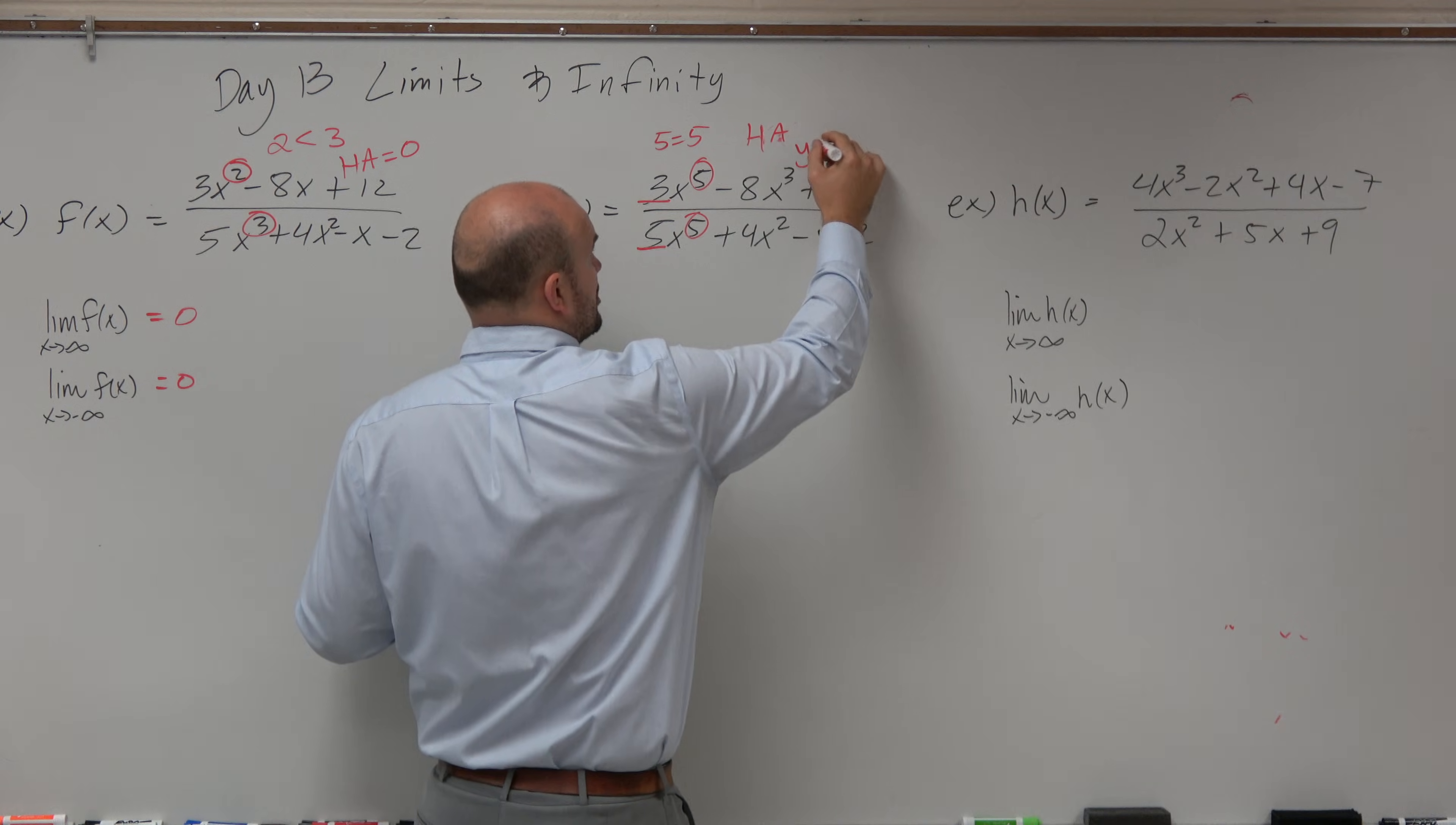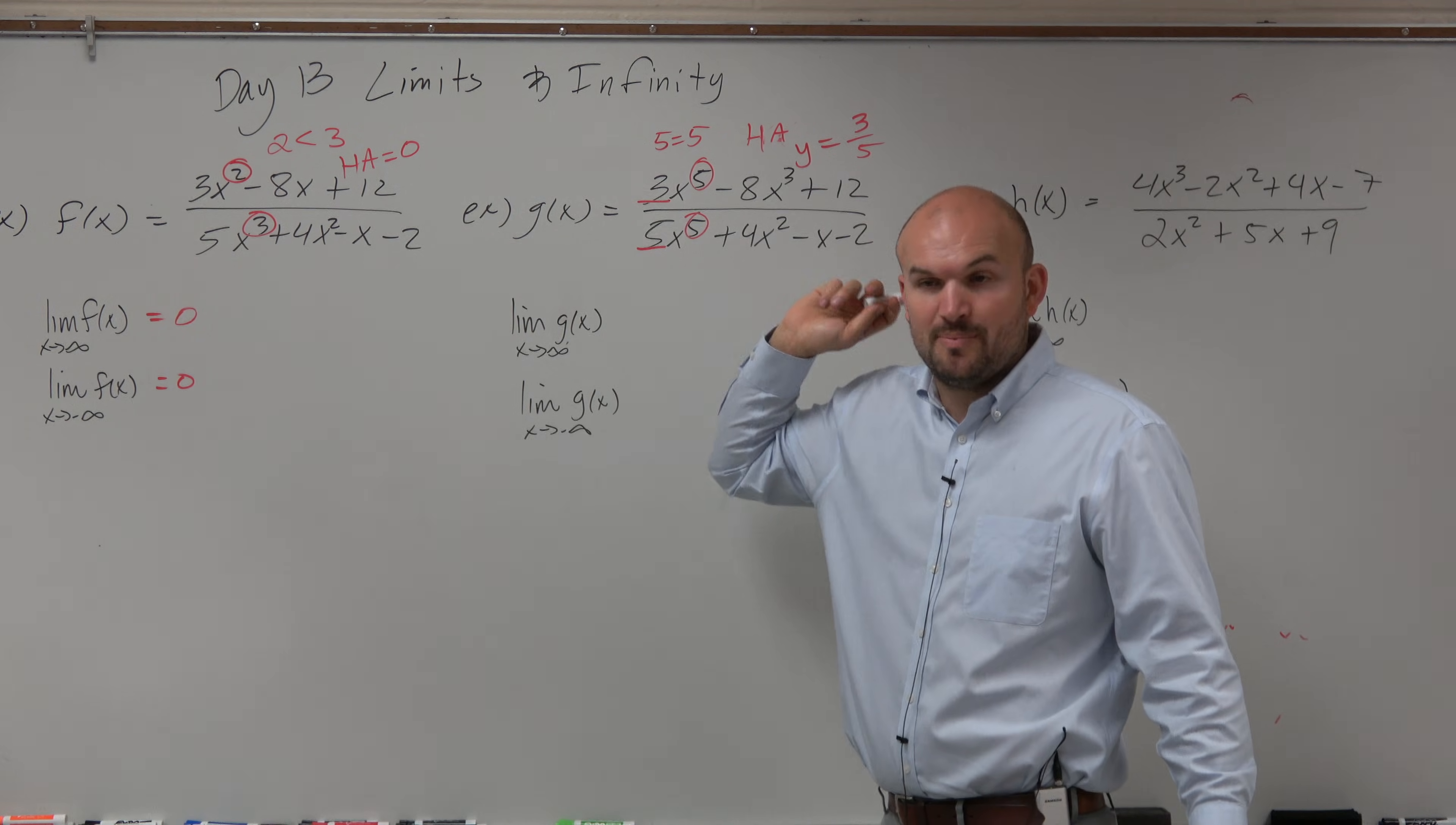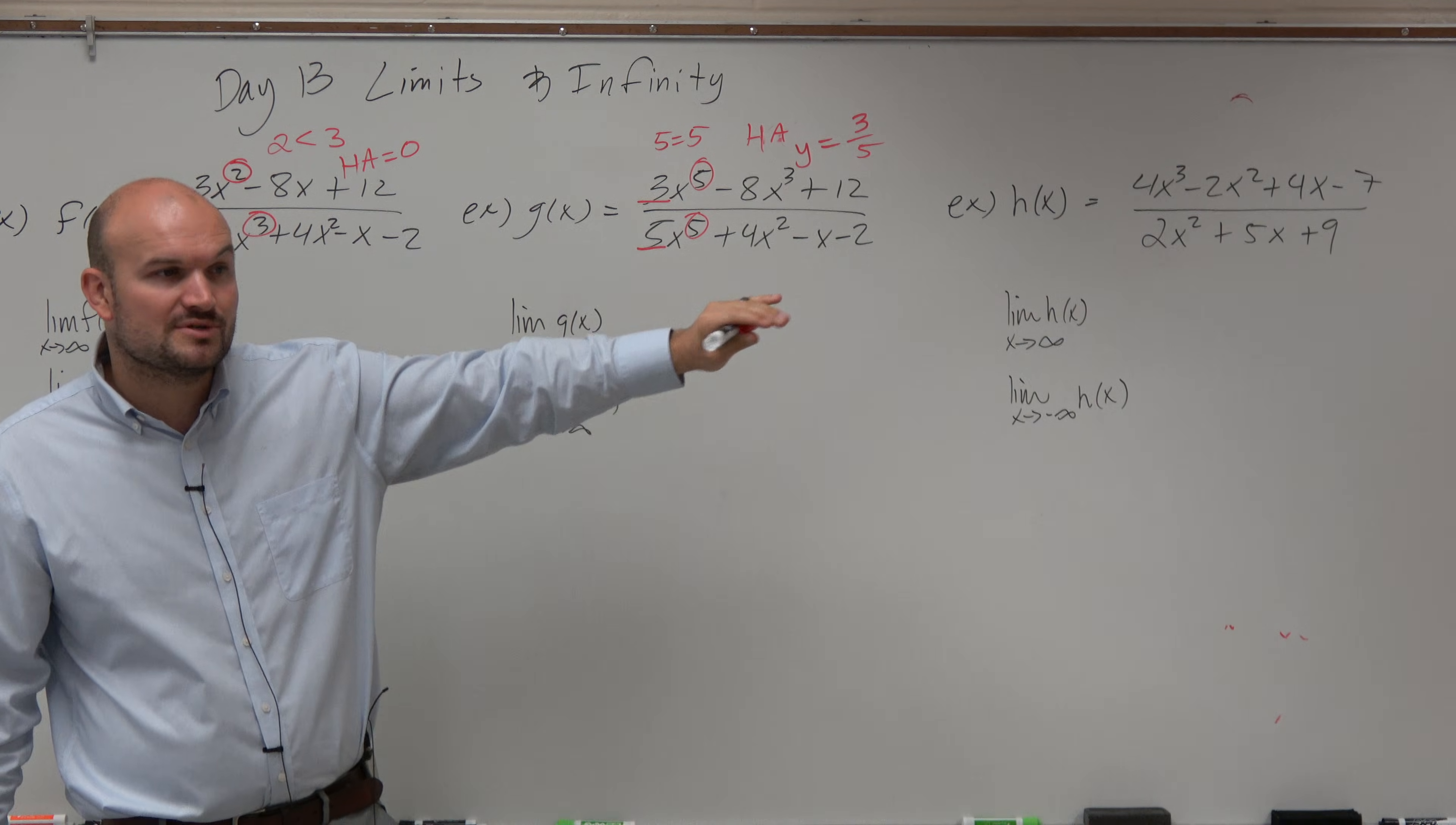So, my horizontal asymptote is y equals 3 fifths. Again, it's an asymptote. So, the graph, no matter what it looks like, who cares what all the rest of the function is, or the polynomials, it doesn't matter. We could put fractions and decimals and make it look all crazy, but it's still, in the end, it's a polynomial.